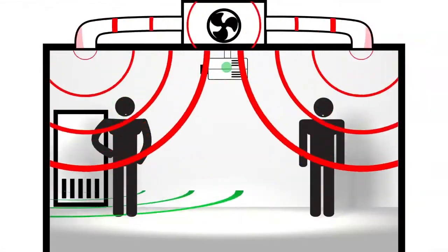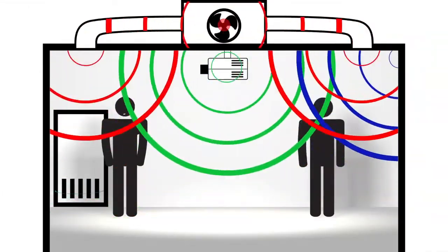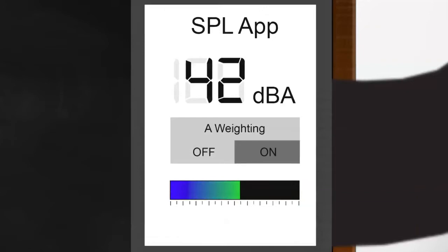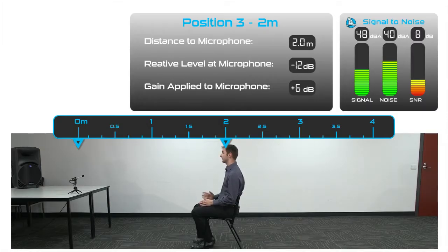In the first instalment we looked at common noise sources in conferencing environments and described how they're measured. In this video we're going to simulate a noisy room environment to demonstrate the effect of noise on a microphone.